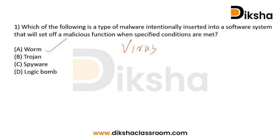Since the question is about malware intentionally inserted into software that sets off a malicious function when specific conditions are met, worm is not the answer. A Trojan is a type of malicious software that looks legitimate but can take control of your computer. It is designed to damage, disrupt, steal, or inflict harmful actions. Initially a Trojan appears innocent and non-harmful, but once it enters the computer system it creates damage — much like the Trojan Horse from the Odyssey story.